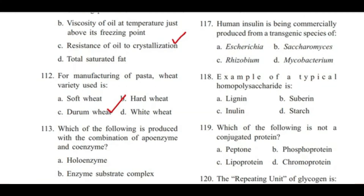Question 113: Which of the following is produced with the combination of apoenzyme and coenzyme? — Holoenzyme, enzyme-substrate complex, prosthetic group, or enzyme-product complex? Answer is A, holoenzyme.